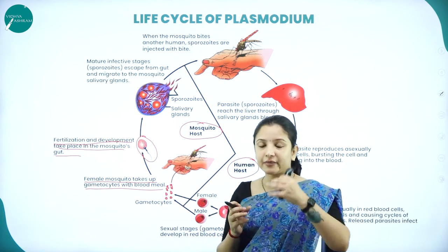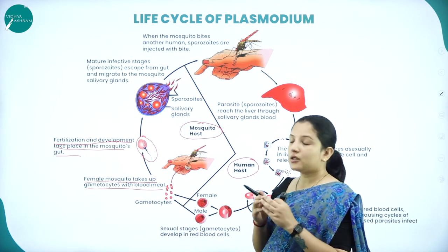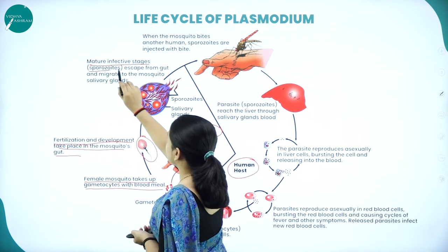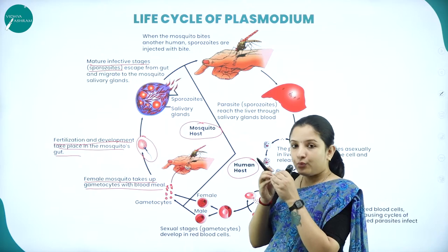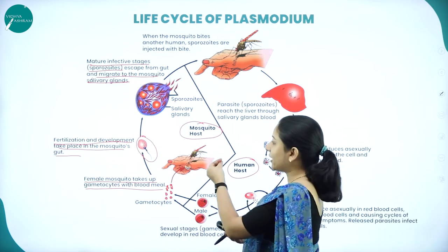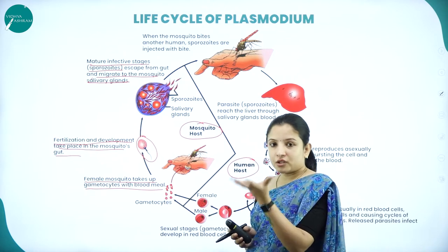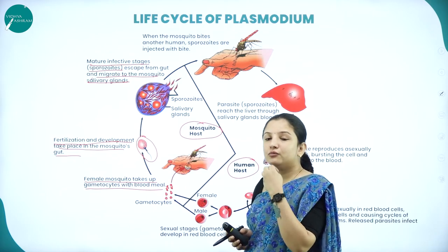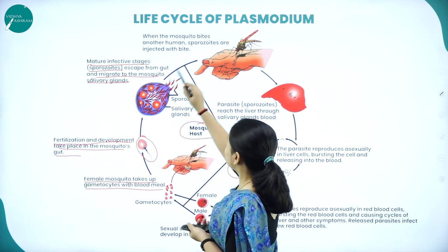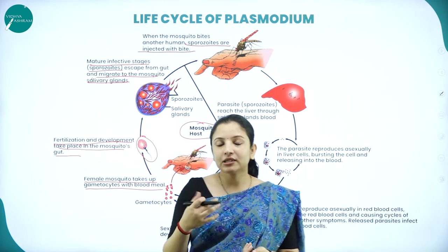After fertilization in the mosquito's gut, the fertilized organism matures into the infective stage called sporozoites. These sporozoites escape from the gut and move into the salivary glands of the mosquito. When the mosquito bites a healthy person, the sporozoites in its saliva are injected into that healthy person, and that is how the infection spreads.